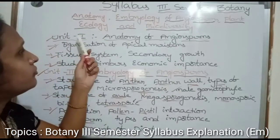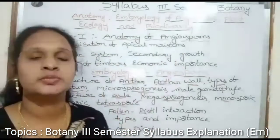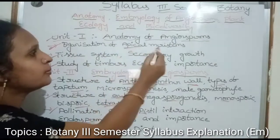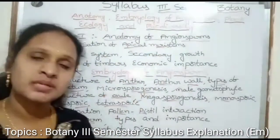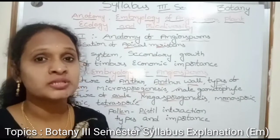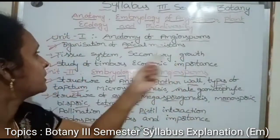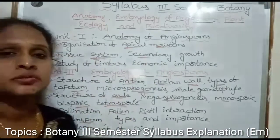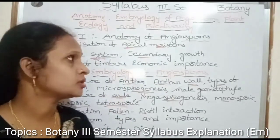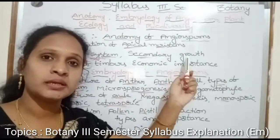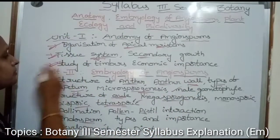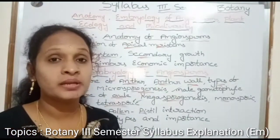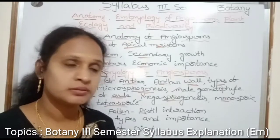Unit 1 is Anatomy of Angiosperms. We have sub-topics: Organization of Apical Meristems — meristems is the first topic. Second topic is Tissue Systems and Secondary Growth. Third topic is Study of Timbers and Economic Importance — timbers is the first topic of economical uses.